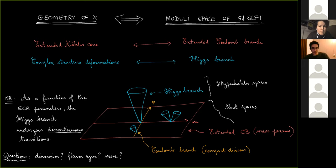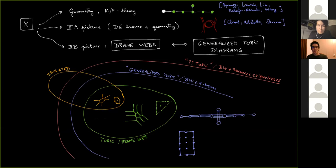The question is: how can we characterize this moduli space, in particular the Higgs branch? The Coulomb branch has been studied by different methods over the years, and the Higgs branch slightly less. We can ask simple questions like: what are their dimensions? What are the isometries of the Higgs branch, which coincide with the flavor symmetry of the theory? Can we know more — for instance, what kind of singularities there are?